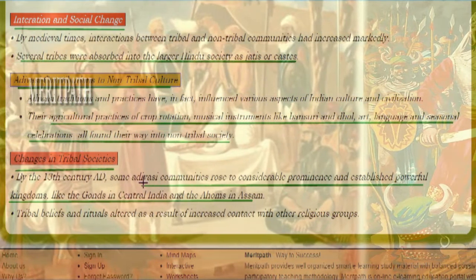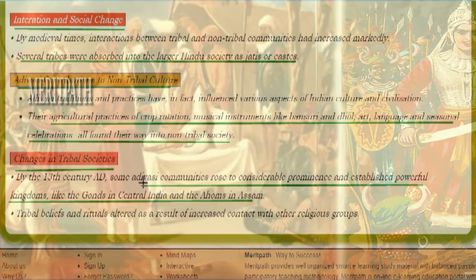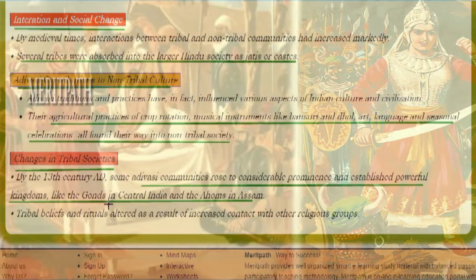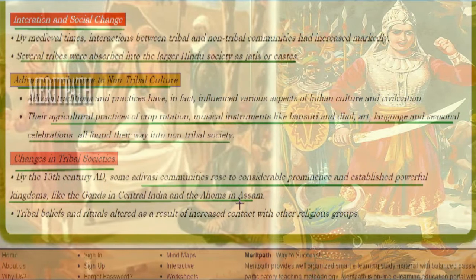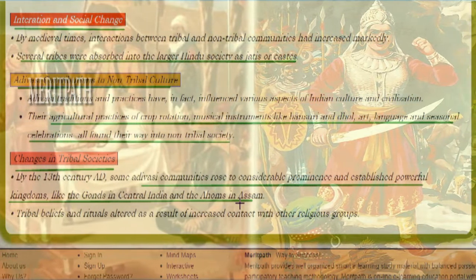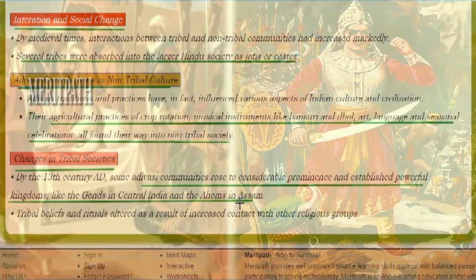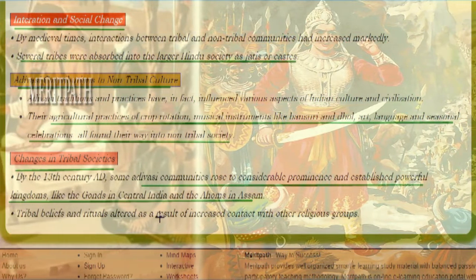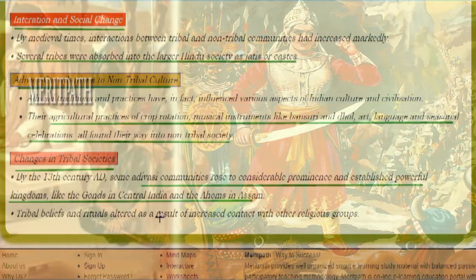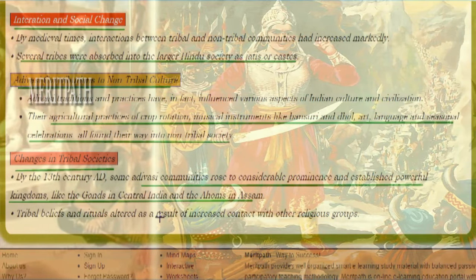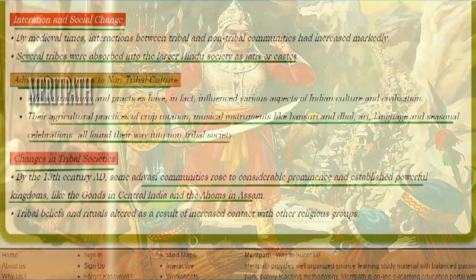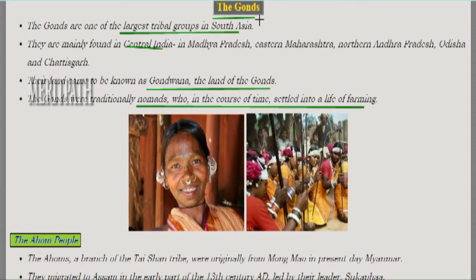By the 13th century AD, Adivasi communities became powerful and important. For example, the Gonds in central India and the Ahoms in Assam became very prominent kingdoms. These people were also in contact with people of other religions, which influenced their beliefs and rituals.